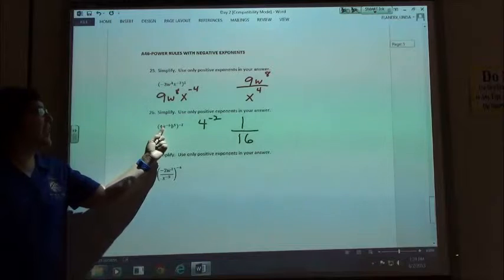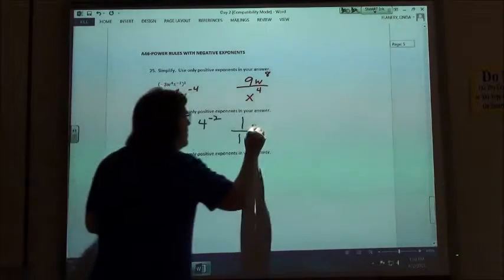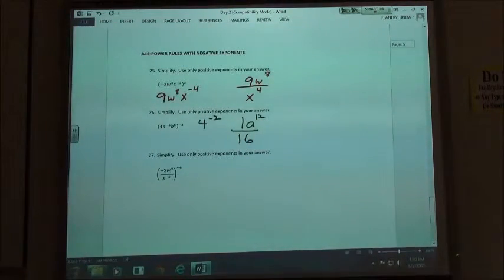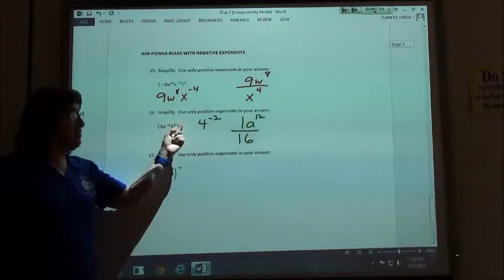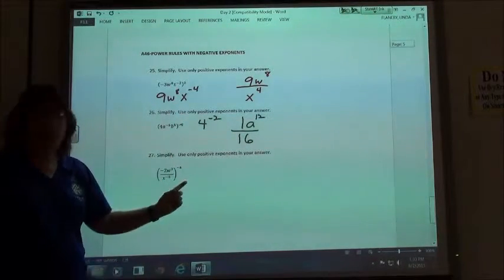If I do a to the negative 6 power raised to the negative 2, I would get a to the 12th. That's going to be on top because it has a positive exponent. If I have b to the 5th raised to the negative 2 power, I get b to the negative 10th, which means it's going to end up, instead of being on top, down on the bottom.